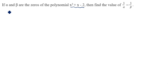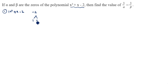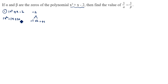First we will see the splitting the middle term method. We have x squared plus x minus 2. Here the coefficient of x squared is 1, so 1 times minus 2 is minus 2. We need two numbers whose product is minus 2 and whose sum is plus 1. Minus 1 into plus 2 is minus 2, and minus 1 plus 2 equals plus 1. So we split x as minus x plus 2x, giving us x squared minus x plus 2x minus 2.